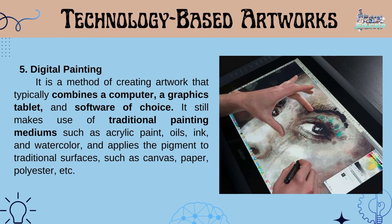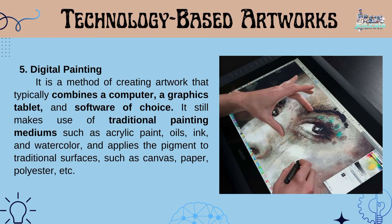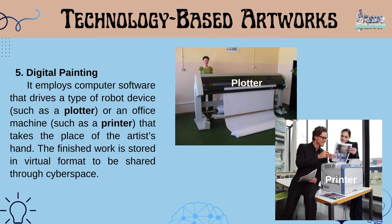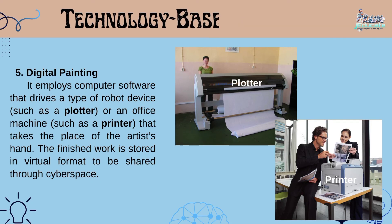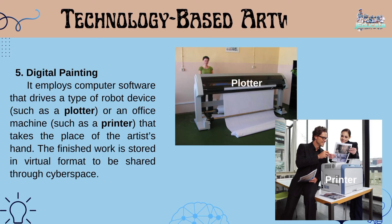Number 5, Digital Painting. It is a method of creating artwork that typically combines a computer, a graphics tablet, and software of choice. It still makes use of traditional painting mediums such as acrylic paint, oils, ink, and watercolor, and applies the pigment to traditional surfaces such as canvas, paper, polyester, etc. It employs computer software that drives a type of robot device such as a plotter, or an office machine such as a printer, that takes the place of the artist's hand. The finished work is stored in virtual format to be shared through cyberspace.